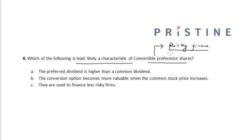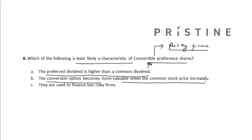Convertible preference shares are used to finance risky firms. In order to incentivize an investor to finance a risky firm, they come with additional benefits: the preferred dividend is higher than a common dividend, and the conversion option becomes more valuable when the stock price increases. When the company is growing fast and investor confidence rises, the stock price increases and the investor can convert their preference shares into common stock.